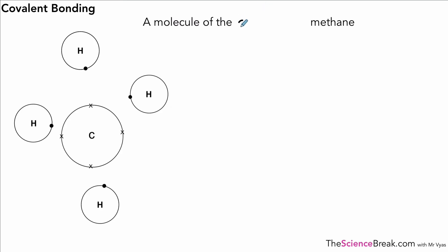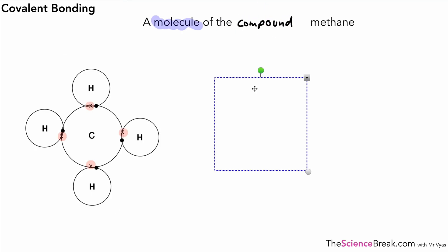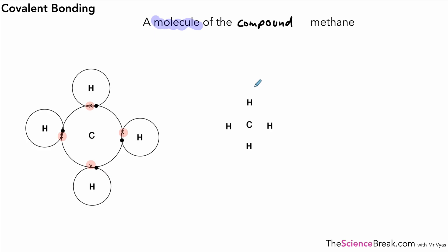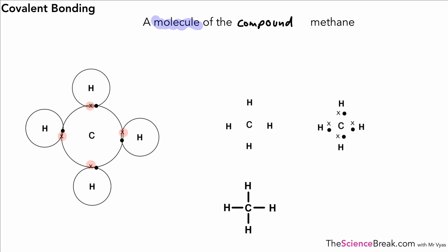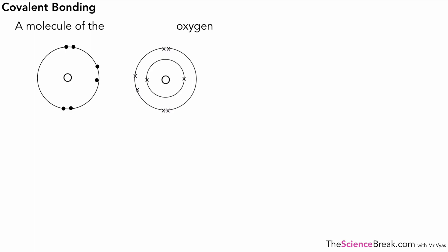Here's our next one — this is methane, CH₄, and again it's a compound. The atom diagram looks like that, and again our second diagram, our third line diagram, and then the fourth ball-and-stick diagram would look like that. Hopefully we're getting the hang of things now.